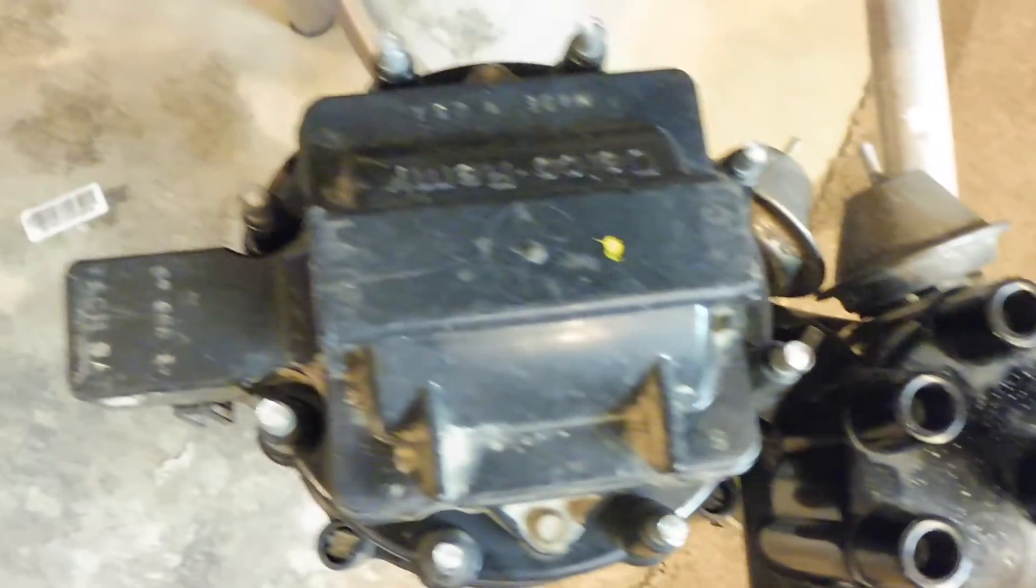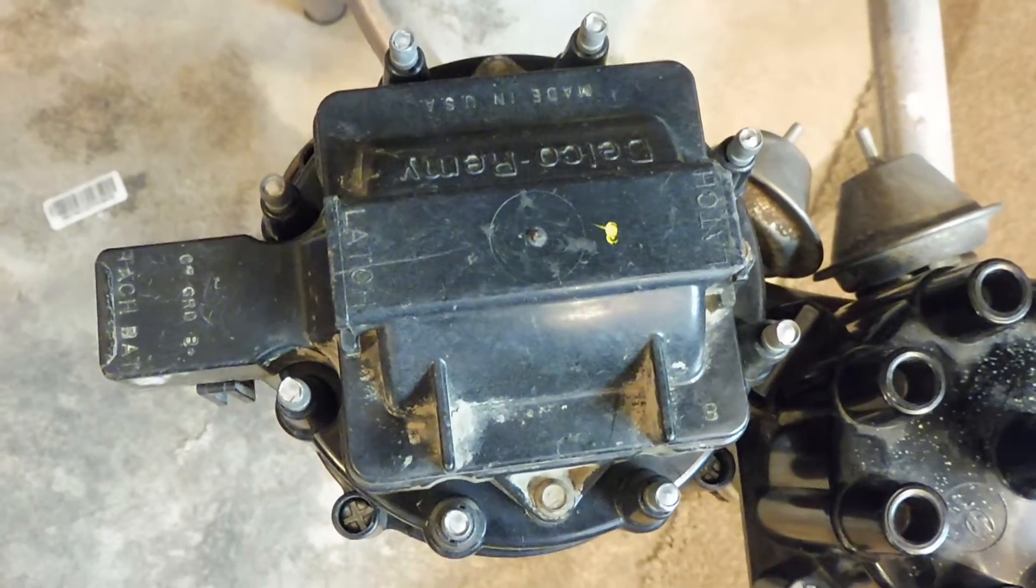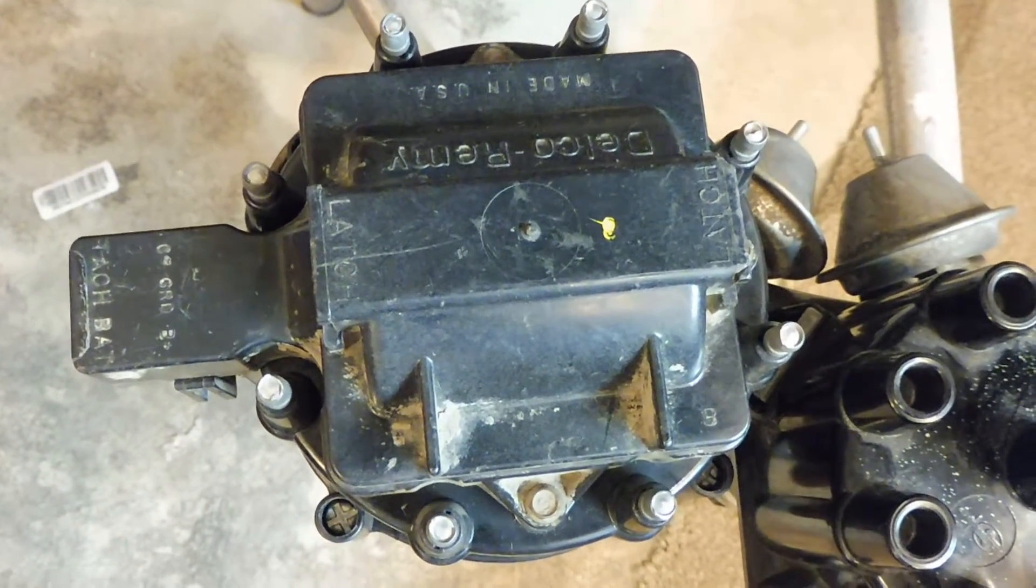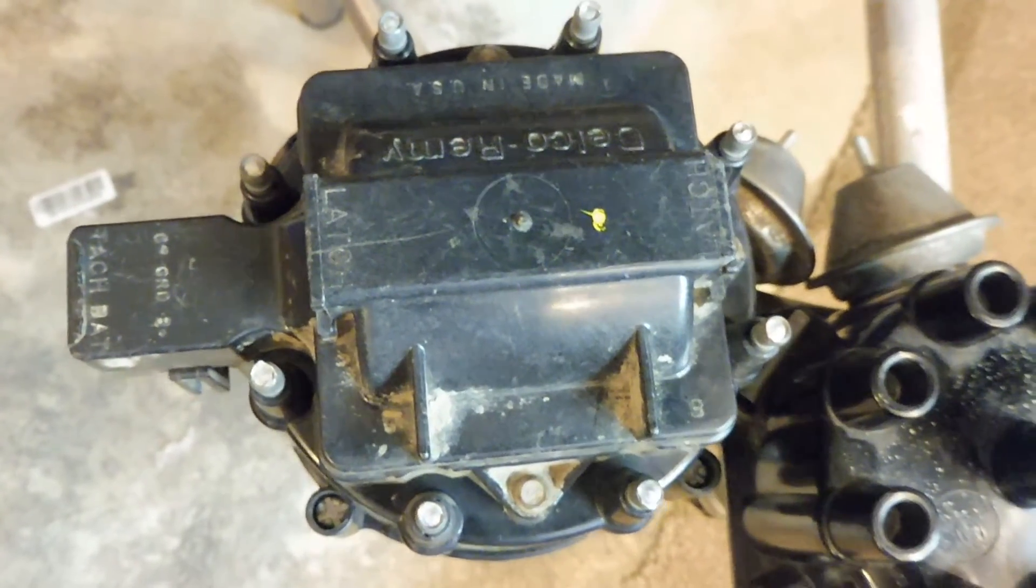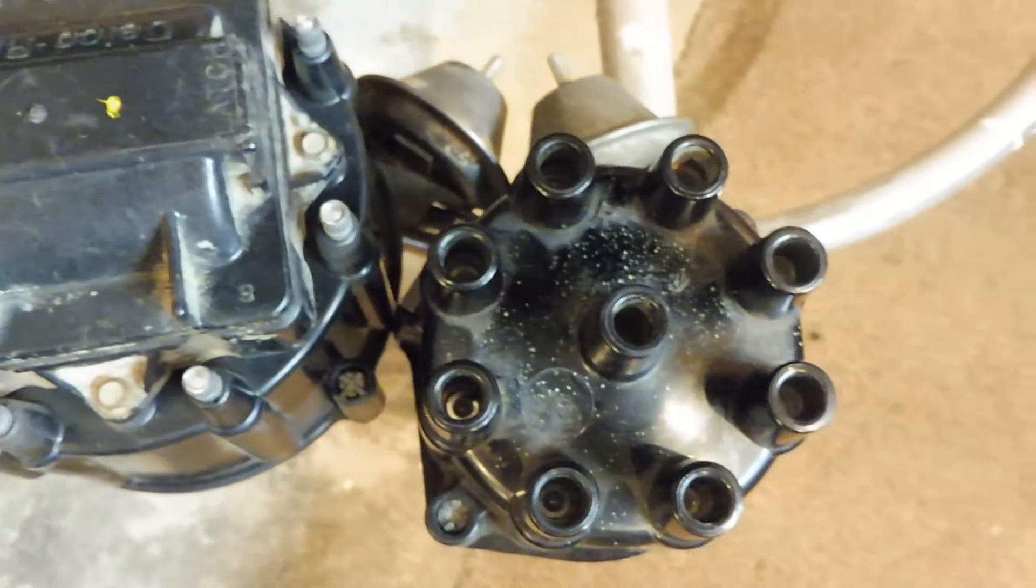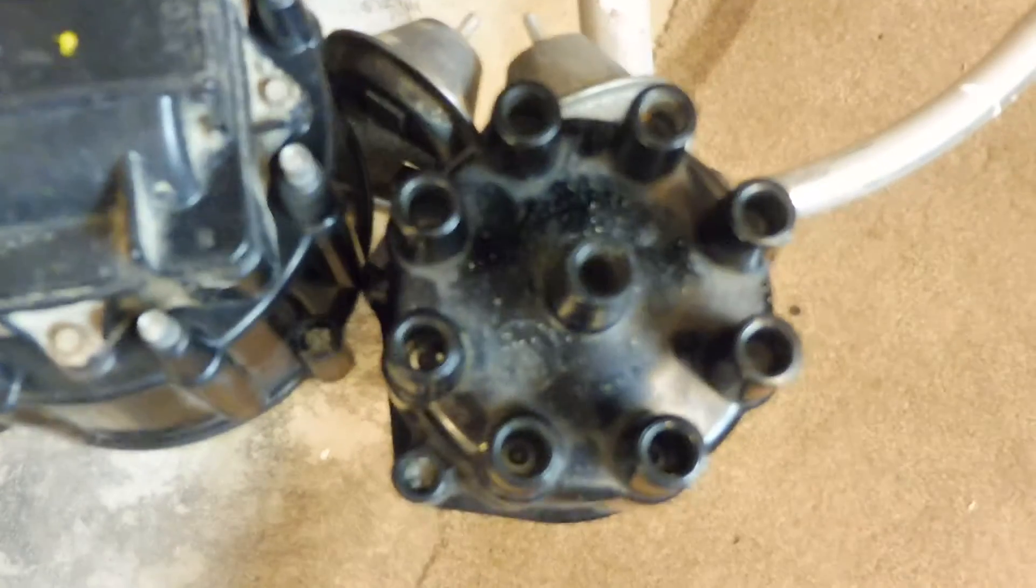Now the GM HEI, it will not work on that because the coil is in the cap and the high voltage output is actually inside the distributor itself. So you're only going to be able to work on the older cars that have a distributor similar to this.